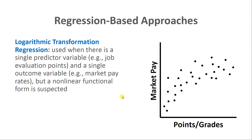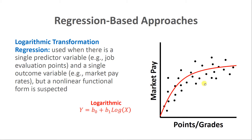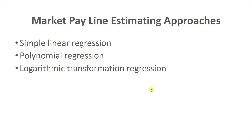Another type of logarithmic transformation regression captures a more classic logarithmic functional form — a single bend with an initial exponential increase followed by an asymptote or deceleration. Here, instead of taking the log of the outcome variable, we take the logarithmic transformation of the predictor variable x. This is called a logarithmic model, as opposed to the exponential model where the outcome variable is log-transformed. This is another way to model non-linear associations.